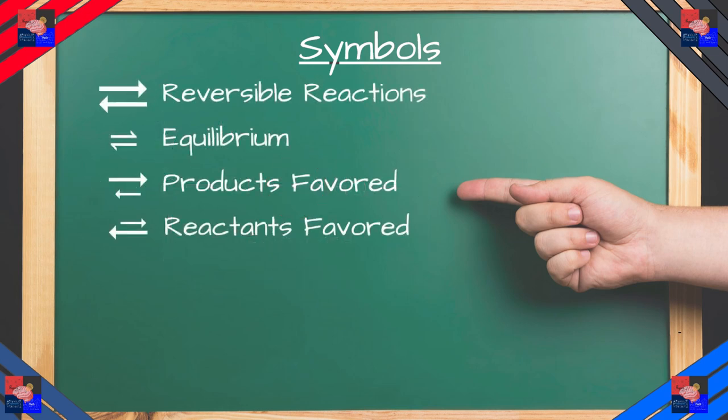This is a reversible reaction. Again, something you've probably seen before. This is where it can go from reactant to product or product to reactant. This is when it is at equilibrium. Yes, these two symbols do not mean the same thing. One is a reversible reaction, and another is simply in equilibrium.